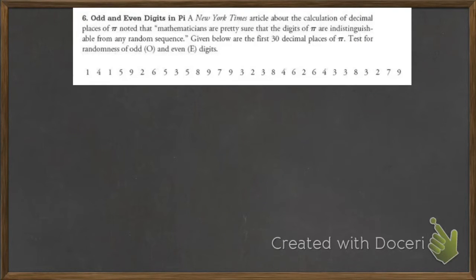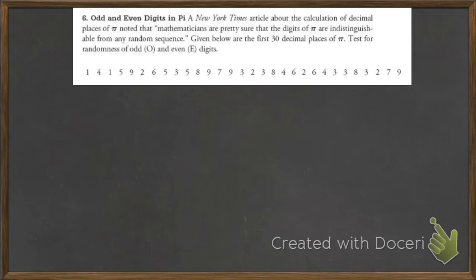What a perfect class to be talking about randomness. We're doing runs tests for randomness. And just to geek out, because we're all math people in here — almost all of us. We want to see if pi is random. That's the first 30 digits of the decimal of pi.